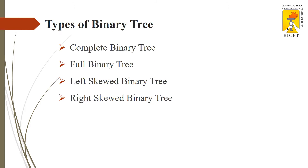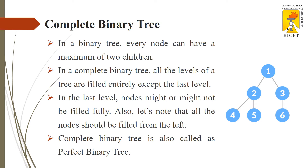There are 4 types of binary tree. One is complete binary tree, the second one is full binary tree, the third one is left skewed binary tree, and the fourth one is right skewed binary tree. We will see them one by one. In a binary tree, every node can have only a maximum of 2 children — that is the definition of binary tree.